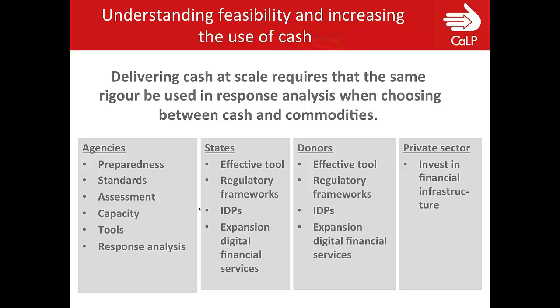For humanitarian development agencies, meaningful commitments around delivering cash at scale in relation to feasibility are around investing in preparedness to scale up, developing interagency standards to better define the core elements of feasibility including the concept of markets and value for money. It's also around systematizing joint multi-sectoral assessments across sectoral mandates and investing more in organizational capacity. It's about developing tools and doing advocacy for cash-based assistance, and formalizing coordination of interagency multi-sectoral response analysis for predictability.